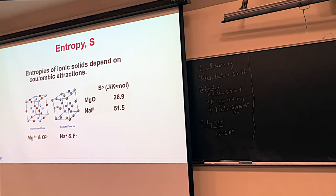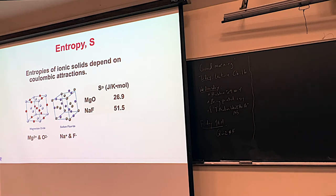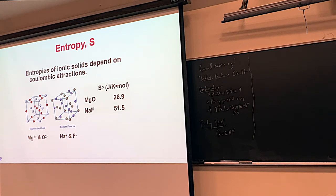The entropy of a solid depends on the strength of the forces holding it together. The weaker the attractive forces, the greater the motion of the ions in the crystal lattice, and the greater the entropy. Coulomb's law says that a positive one, negative one charge is strong, but a positive two, negative two charge is even stronger — the atoms hold on even more, and we see that in entropy as well. The NaF ions were actually moving more than the MgO ions because MgO has this double handshake — positive two, negative two — while NaF has a single handshake — positive one, negative one. Assuming all else is equal, positive one, negative one will have higher entropy than positive two, negative two.